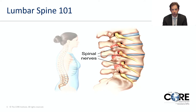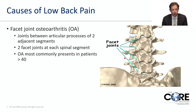This is another view specifically of the nerve roots, showing how the nerve roots exit the spine. At each level of the lumbar spine, there's a different nerve root which provides strength and sensation to the legs. There is a facet joint on each side of the spine.